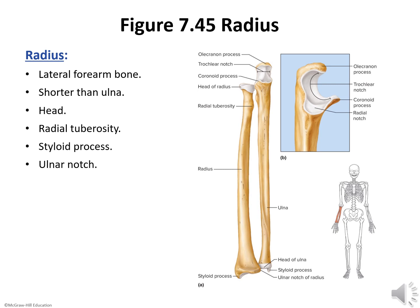On the radial shaft, just below the head, is a process called the radial tuberosity. It is an attachment for the biceps brachii muscle, which bends the upper limb at the elbow. At the distal end of the radius, a lateral styloid process provides attachments for ligaments of the wrist.